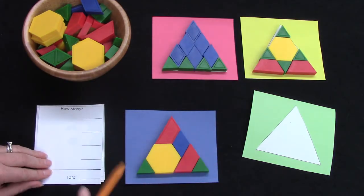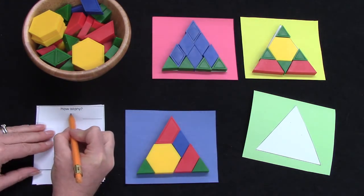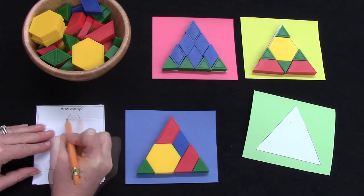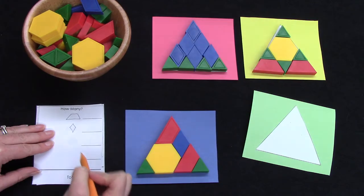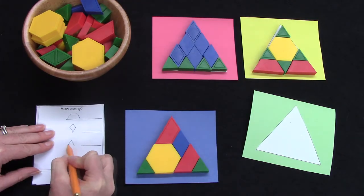I am going to sort my shapes. I'm going to sort them by trapezoid, by rhombus, by triangle, and by hexagon.